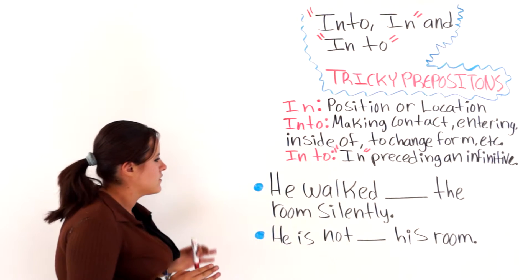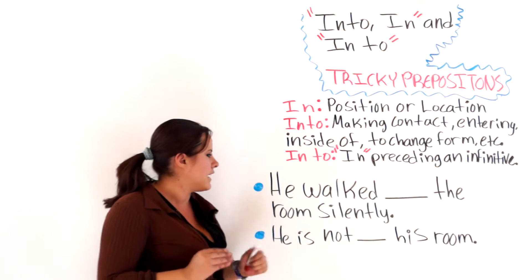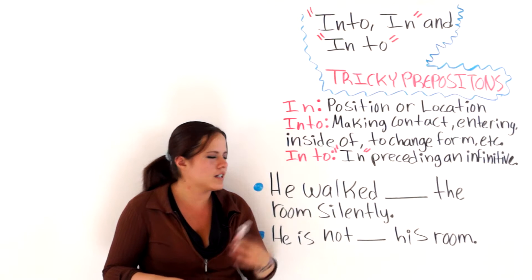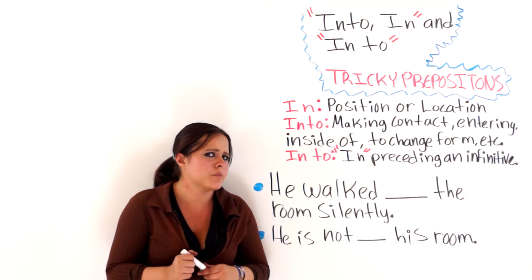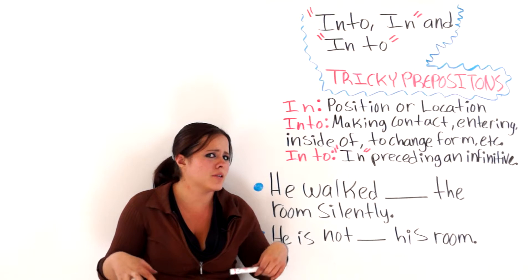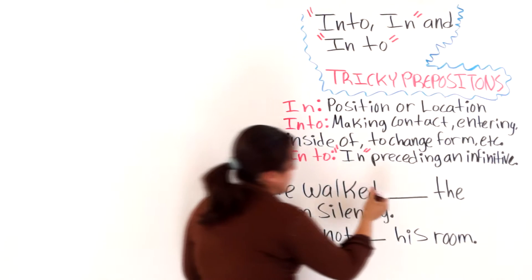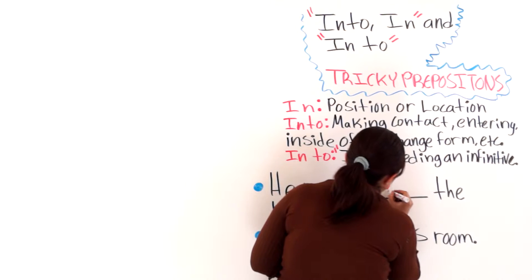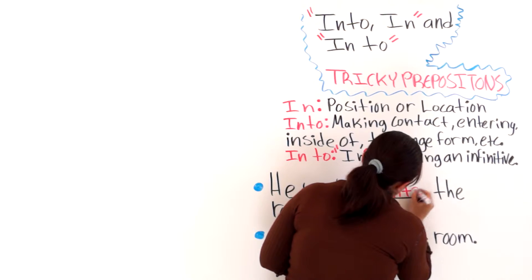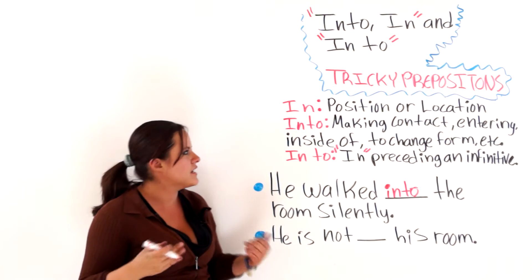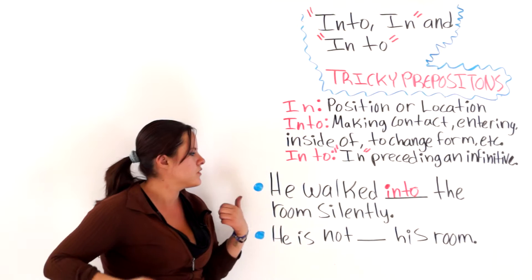The first one says, he walked blank the room silently. You could say, he walked in the room silently. But it would sound a little bit more coherent if you said, he walked into the room silently. Which means, he entered the room silently.